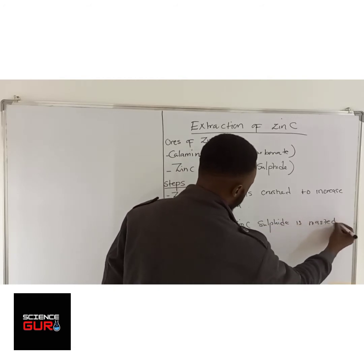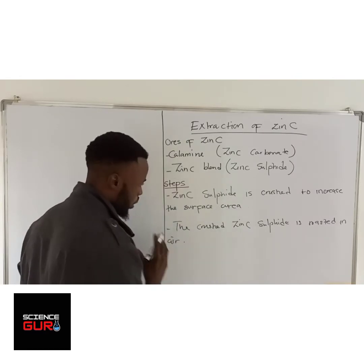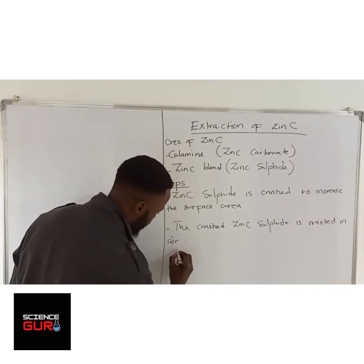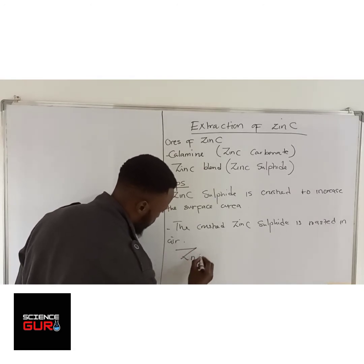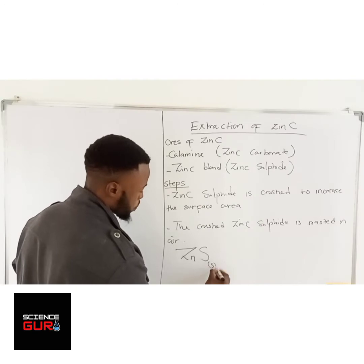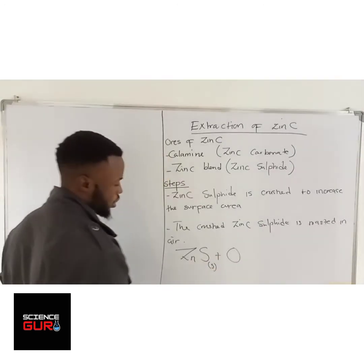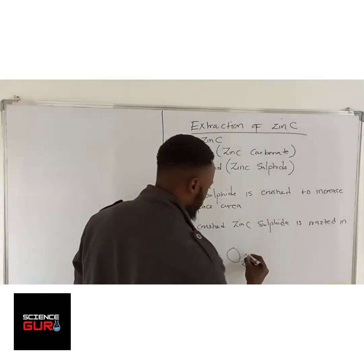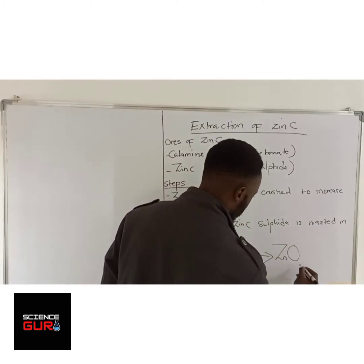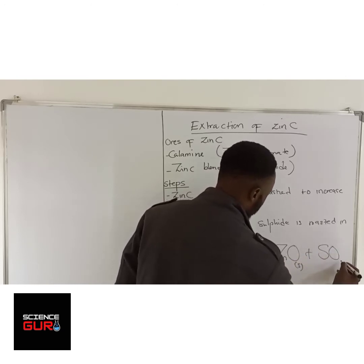Step two: the crushed zinc sulfide is roasted in air. The equation is: zinc sulfide (solid) + oxygen (air) → zinc oxide (solid) + sulfur dioxide (gas).